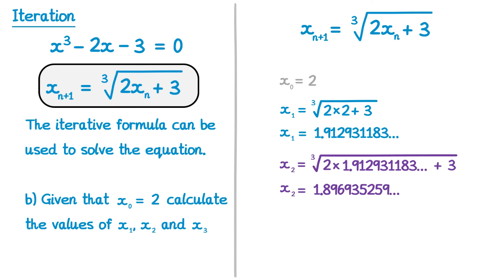So x2 would come out as this number. We can then imagine that x2 is our current term and then calculate x3. So x3 would be the cube root of 2 times our current term, which is x2, add 3. We can then substitute the x2 for our most recent number, which is this one, and then type this into a calculator. Again, being sure to use the whole number. So x3 would come out as this.